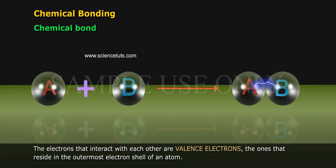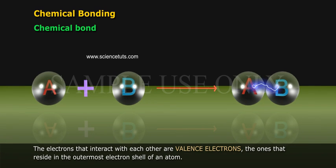The electrons that interact with each other are valence electrons, the ones that reside in the outermost electron shell of an atom.